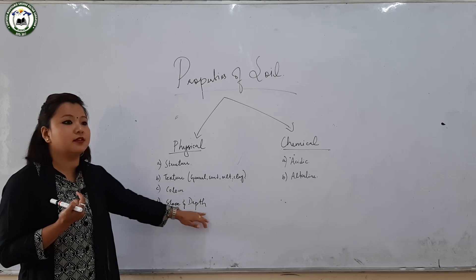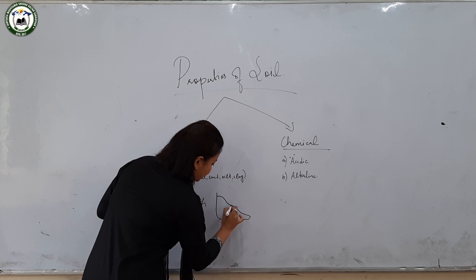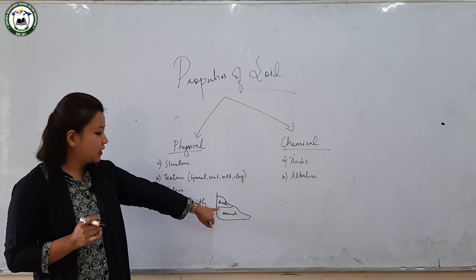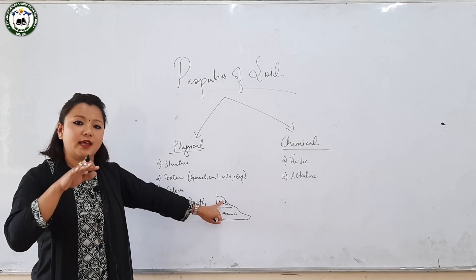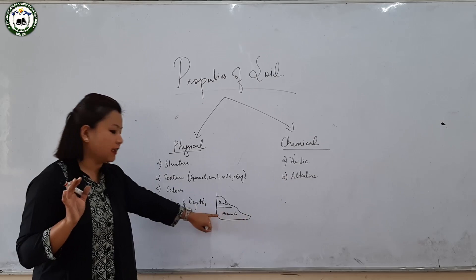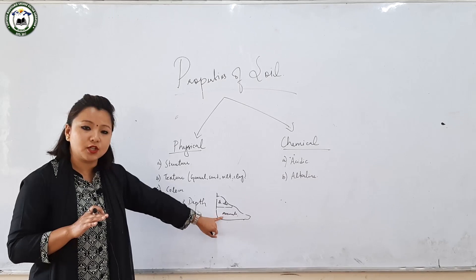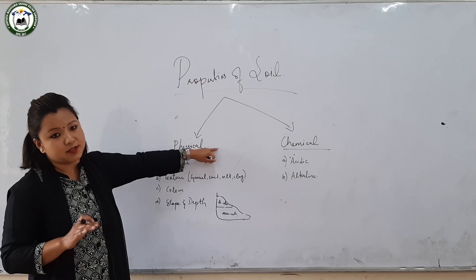The other physical property is slope and depth. On a high slope with steep gradient, there is leaching or washing away of materials from the top, causing less development of the profile. In low-lying areas, there is accumulation of materials brought down from the upper soil, leading to accumulation and layer formation. Slope and depth thus also determine the physical properties of the soil.